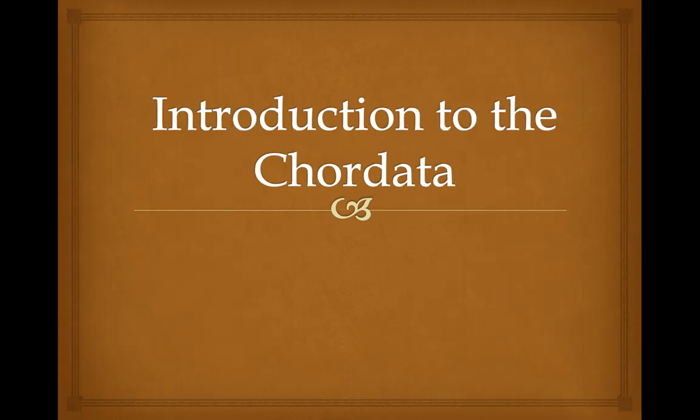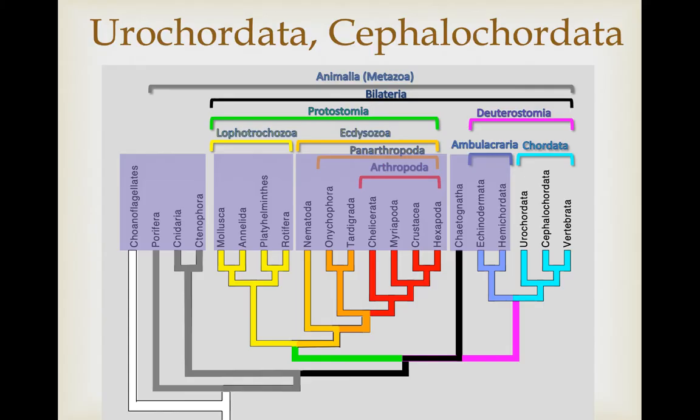In this video, we introduce our very last major clade, the chordata. Here are the animals we've covered thus far — we're in the deuterostomia. We've covered the ambulacria, which includes the echinoderms and the hemichordates. Now we're going into the chordata, and we'll cover the two basal lineages first: the urochordates and the cephalochordates.